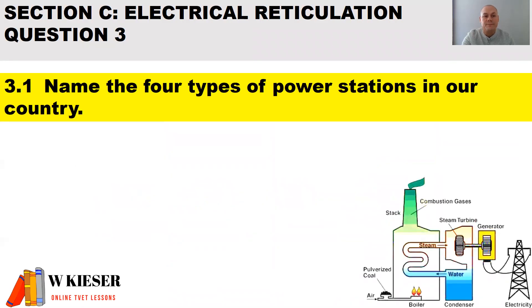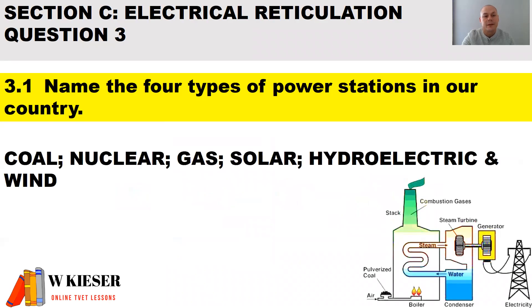The first part of the question: name the four types of power stations found in our country. We get coal, nuclear, gas, solar, hydroelectric, and wind.